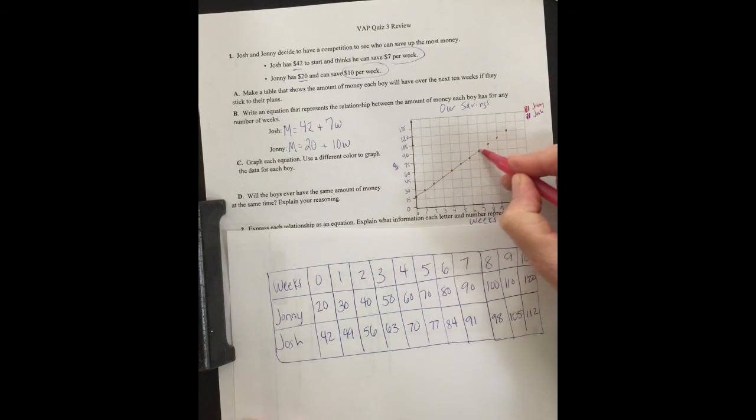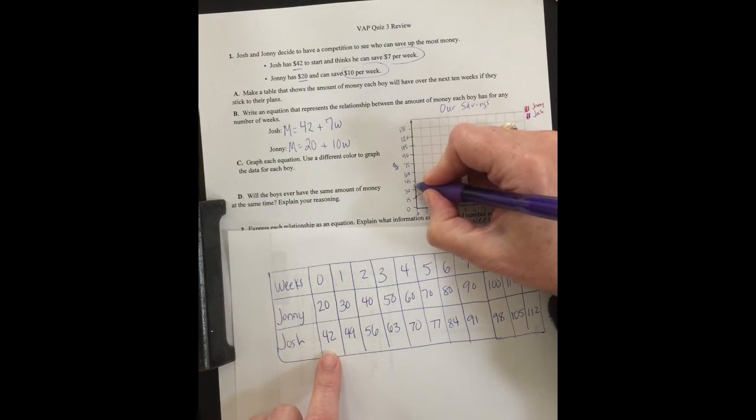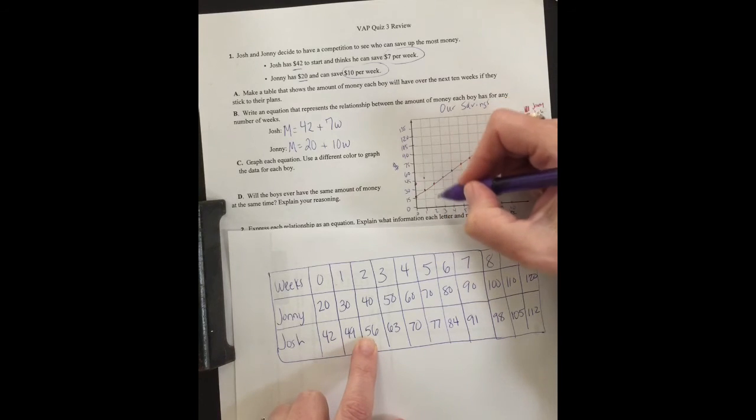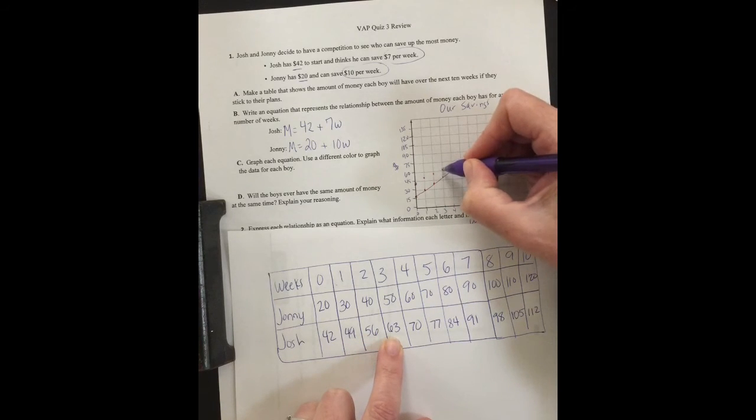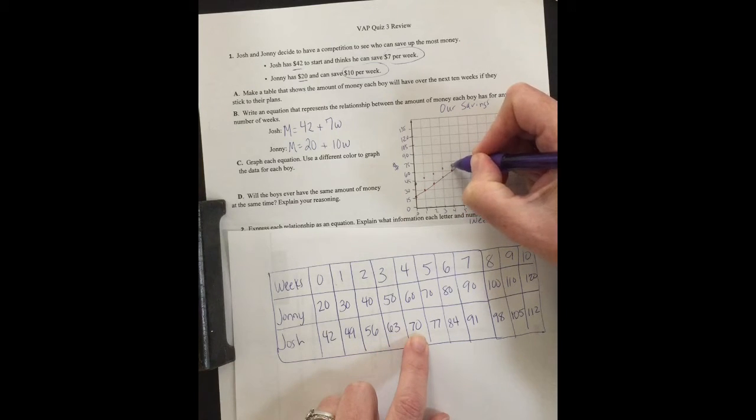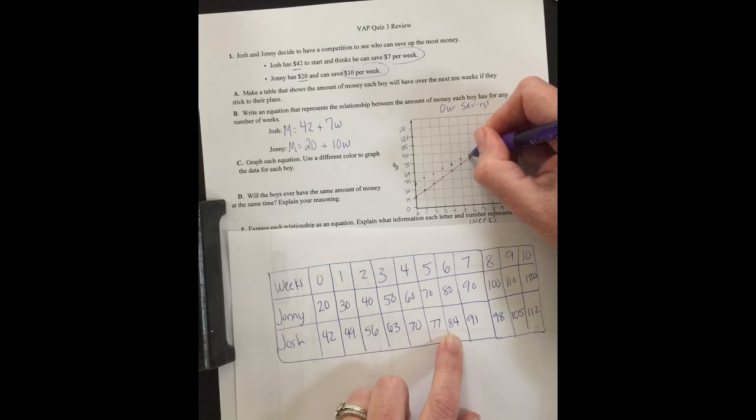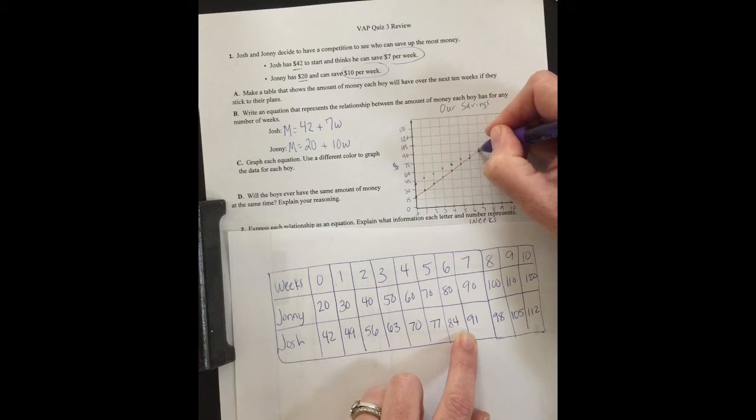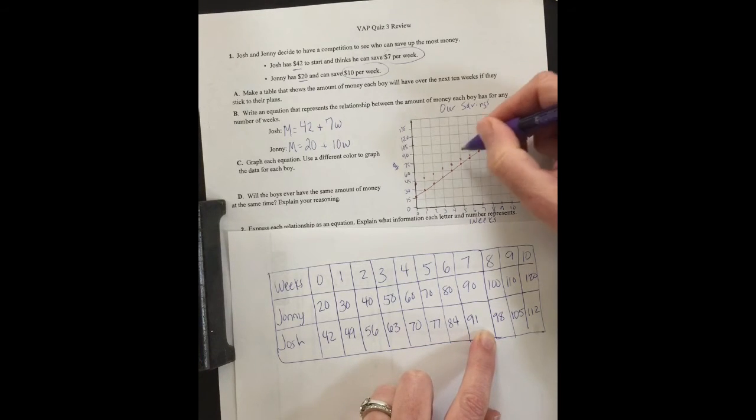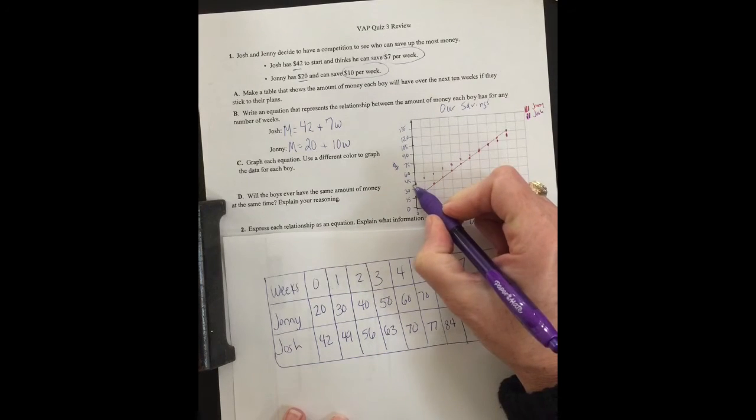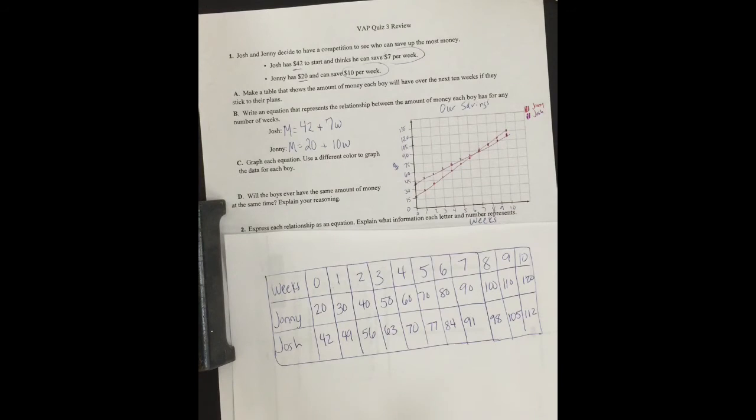Alright, so that's Johnny's savings. Josh, at week zero, had $42. Then he had $49, then $56. It's kind of hard on these little graphs. Then $63, $70, $77, $84, $91, $98, $105, $112. It's hard to be exact on these little tiny graphs, but you get the idea here.